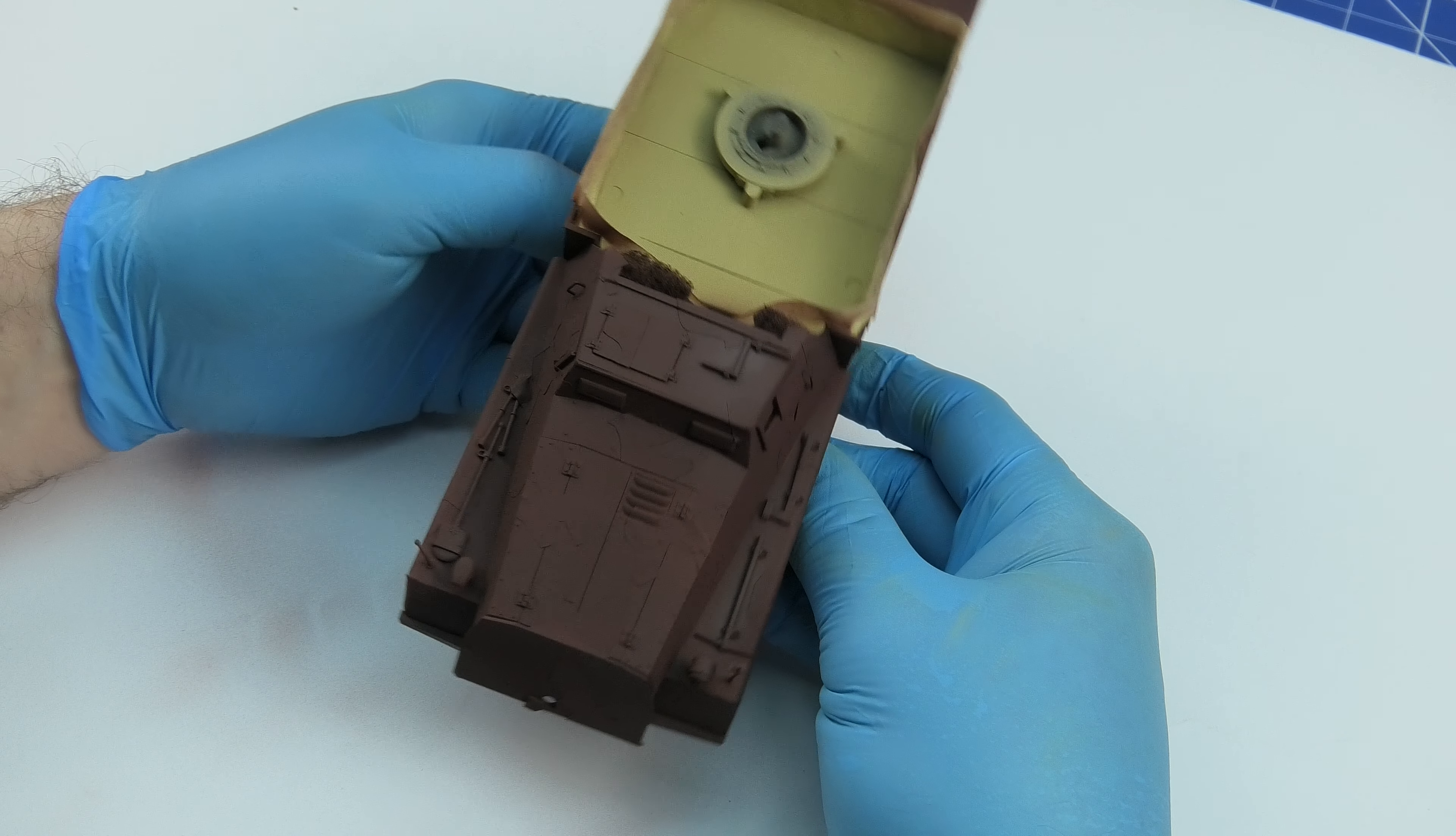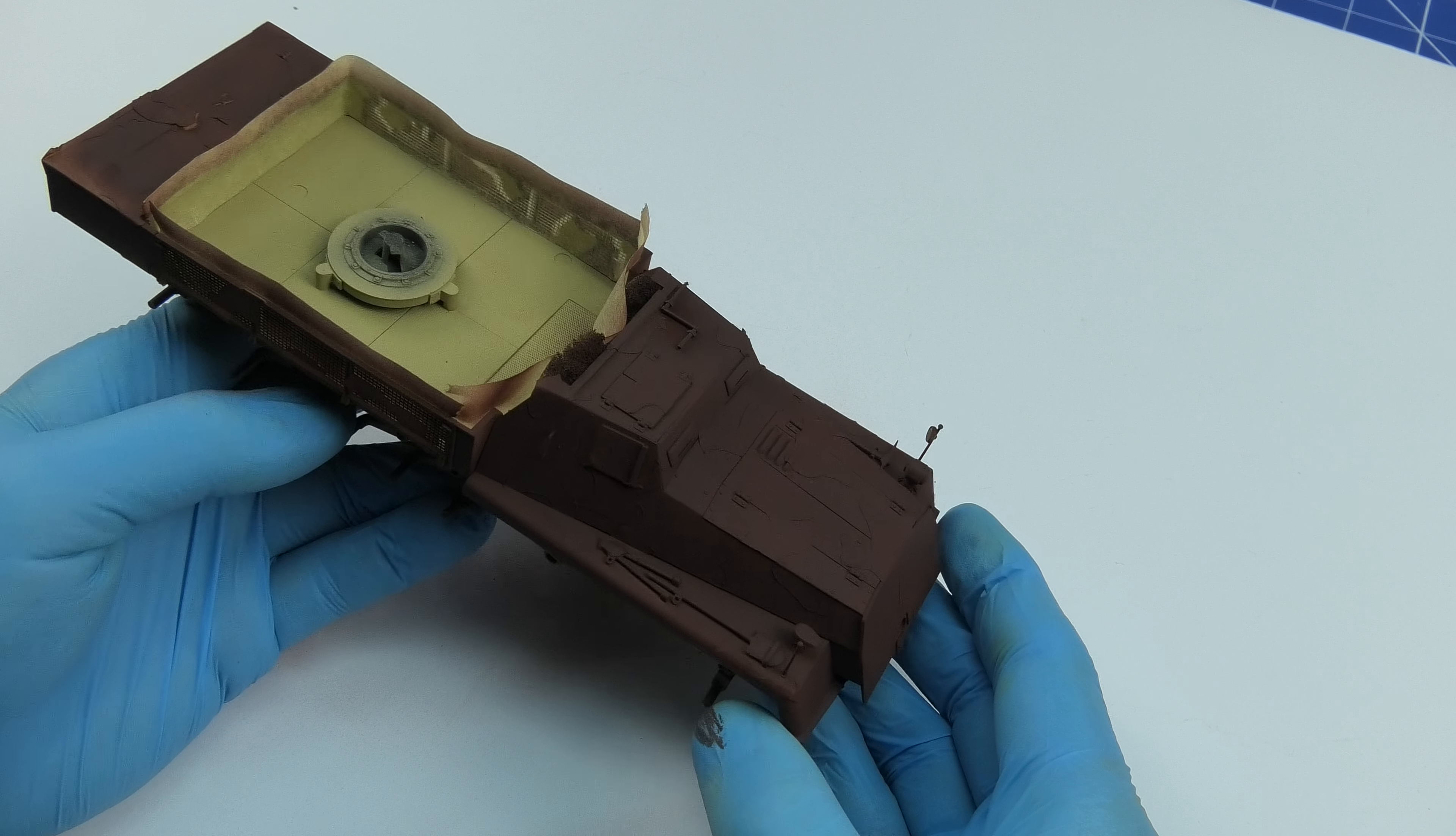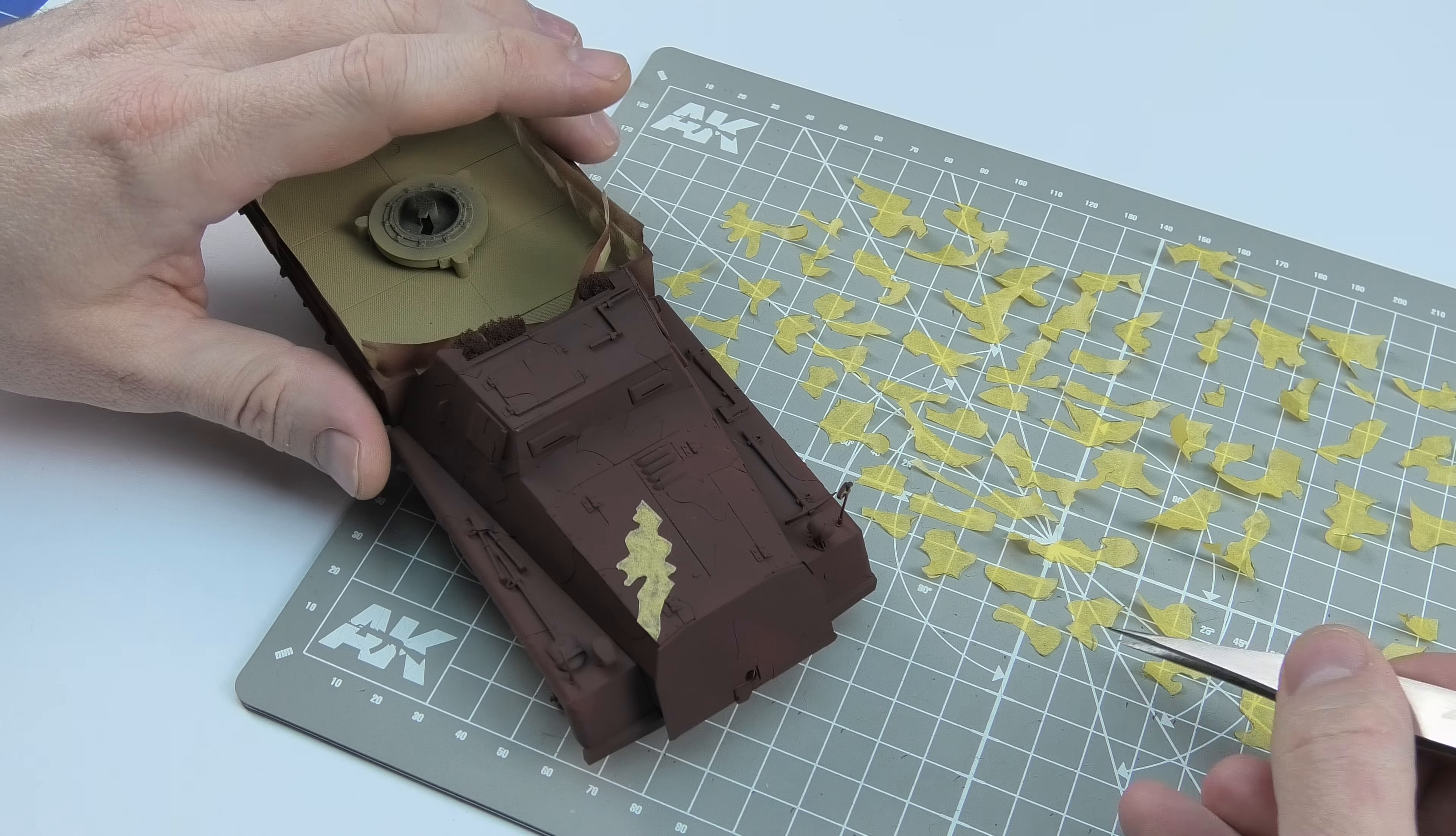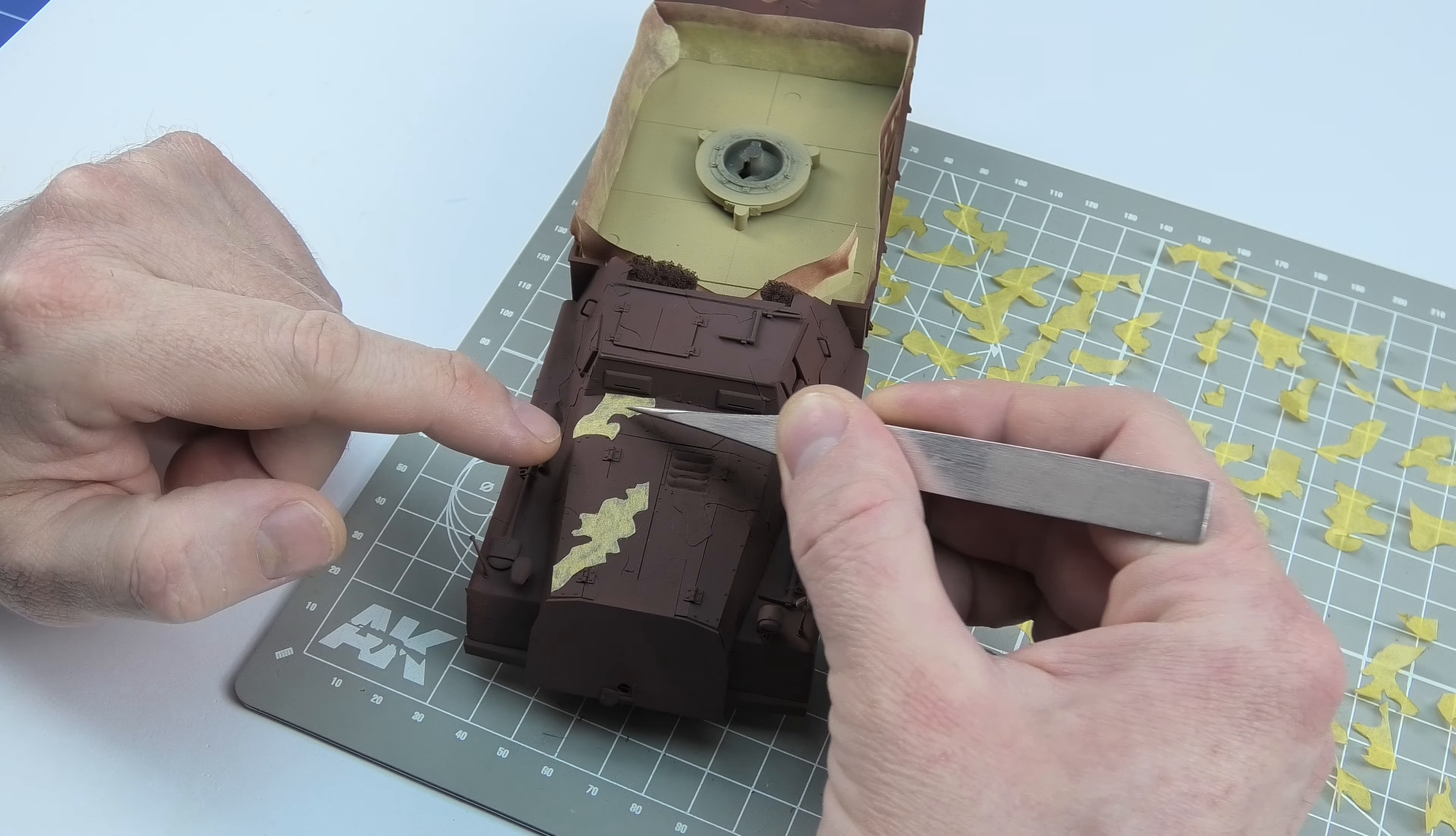I left the model for a while to dry well and started to put on more masks so that this time I would cover the brown painted a moment ago. We repeat the entire procedure and apply more cutouts.